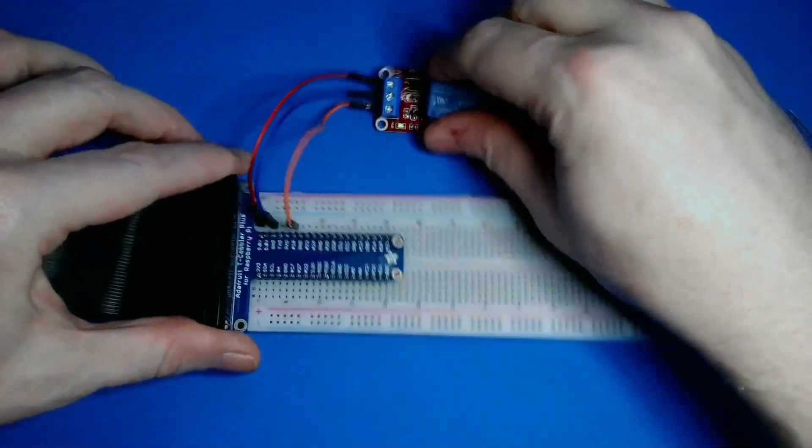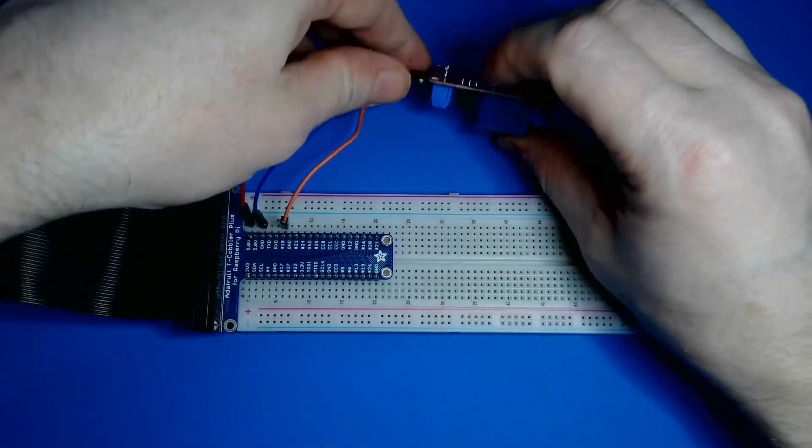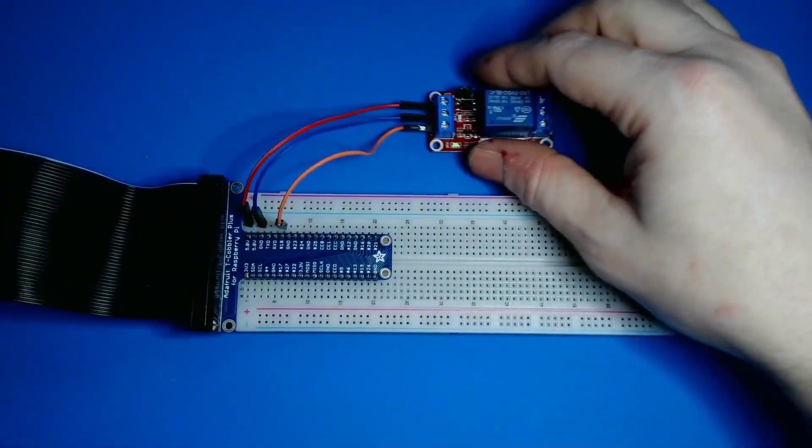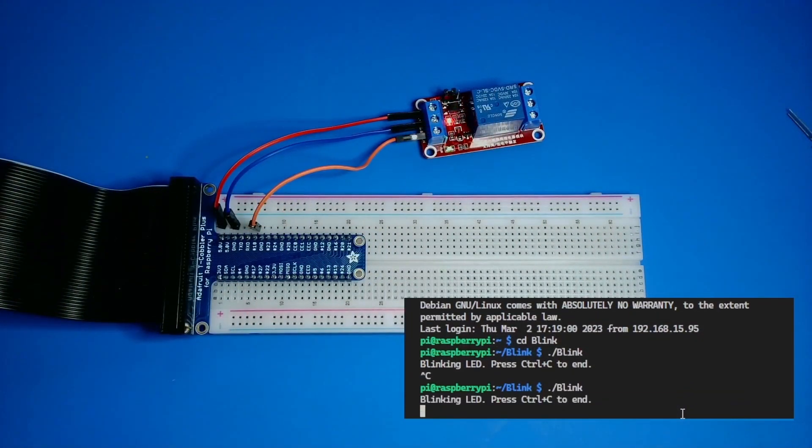Finally, I'll connect the input jumper wire to pin 18, which is what will actuate the relay. I can test the relay now. It has an output LED we can observe. I'll run my app again, and I can see the LED on the relay is blinking. This means the relay is working.